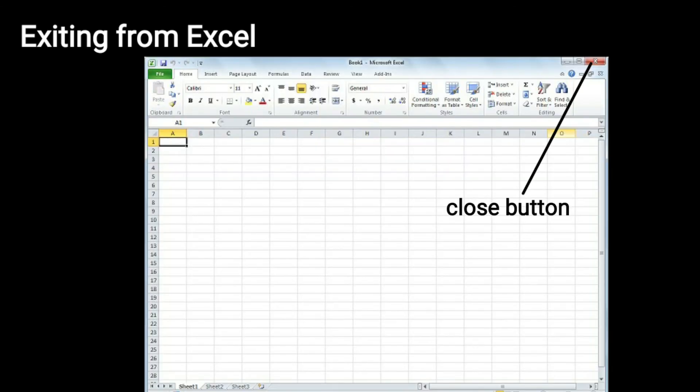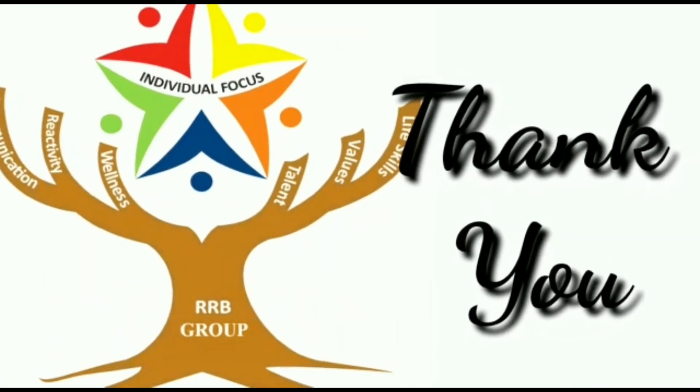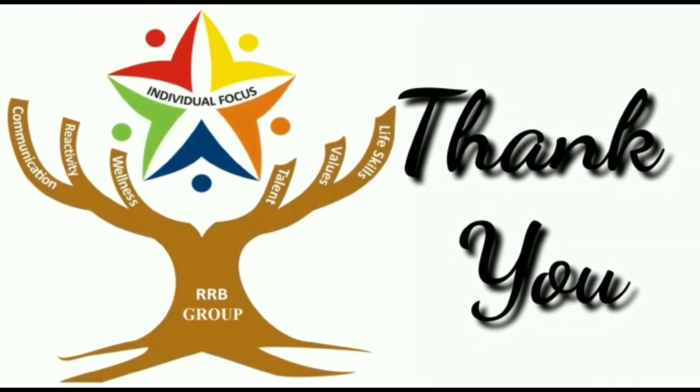Next one is exiting from Excel. अगर आप worksheet close करना चाहते हैं, then Close button पर click करें और आपकी worksheet close हो जाएगी। आप another way से भी exit कर सकते हैं — File tab पर click करें और Close option select करें, और आप Excel से exit कर जाते हैं। Now your chapter is completed. Thank you class, till then stay home, stay safe. Thank you.